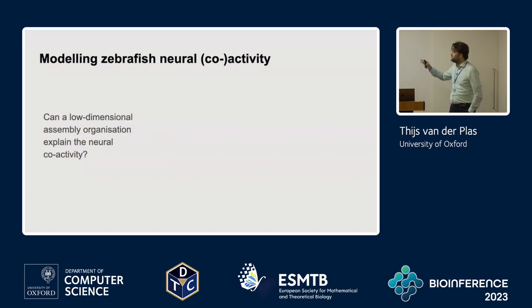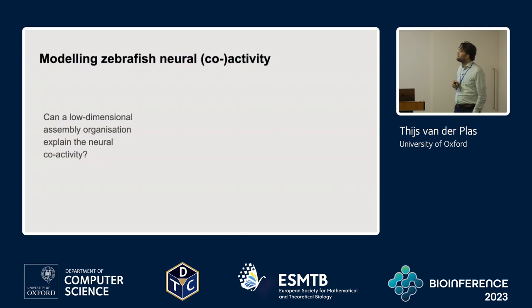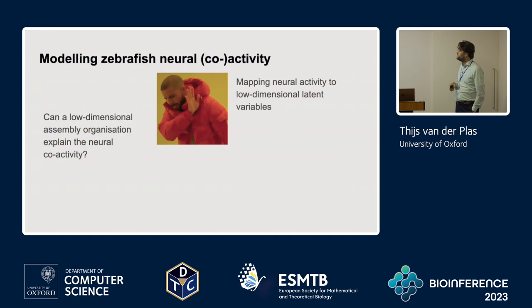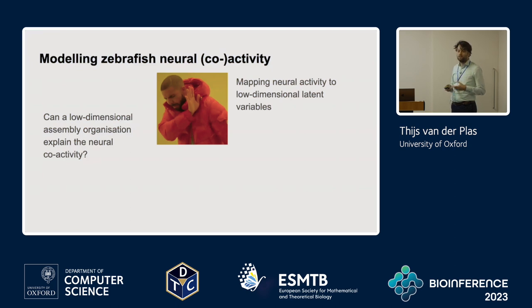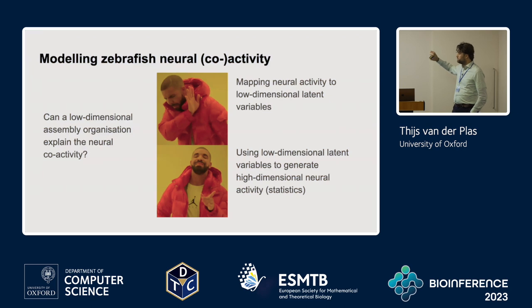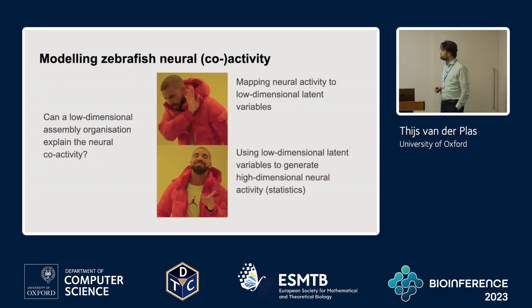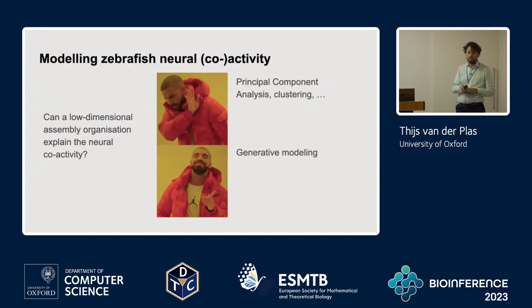We are interested in knowing: can a low dimensional organization of assemblies — groups of cells — explain this high dimensional neural activity? We are definitely not the first to ask this. Previously a naive approach has been to map this high dimensional activity onto a low dimensional set of latent variables, for example using PCA. Although this can be useful, we think it doesn't prove that a low dimensional set of variables is sufficient to generate this high dimensional activity. Instead we are flipping this argument and creating a generative model.